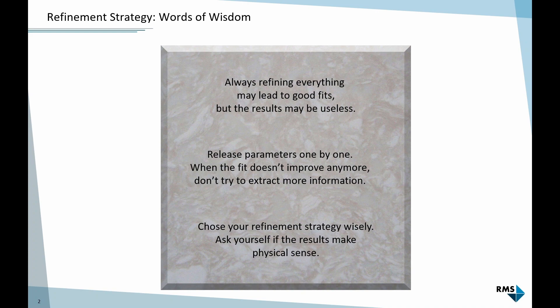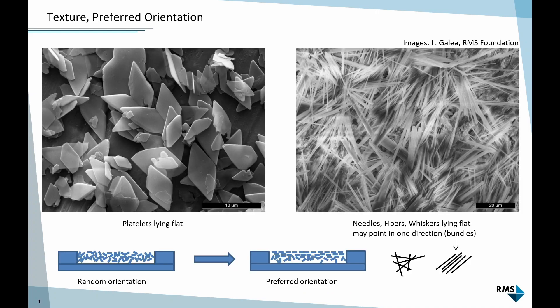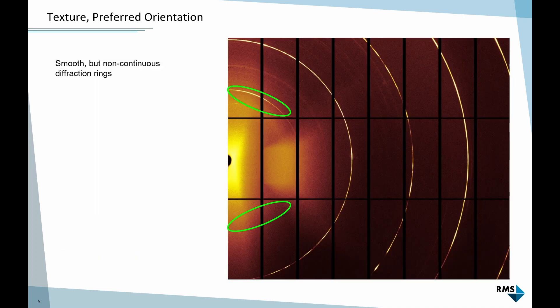Let's start with the first example: texture or preferred orientation. Just as a brief repetition, it's something that occurs when the crystals have an anisotropic shape - platelets or needles. As we discussed yesterday, it's hard to get a perfectly randomly oriented surface of the sample in the sample holder. The crystals tend to align, and that causes problems in the refinement.